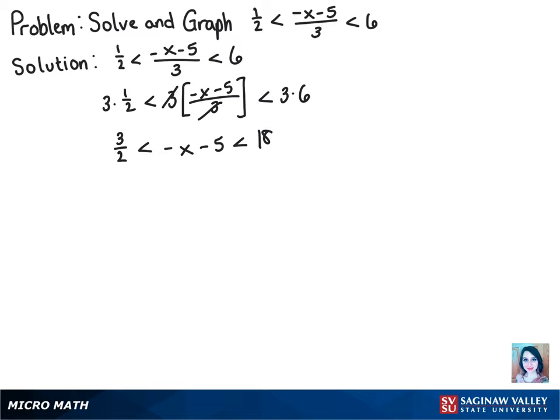Now we can add 5 to all sides of the inequality. And that gets us 13/2 is less than negative x is less than 23.